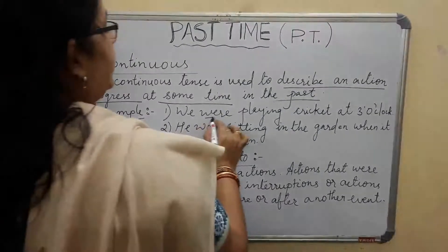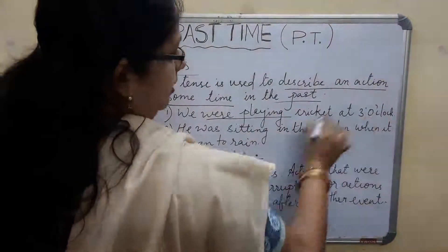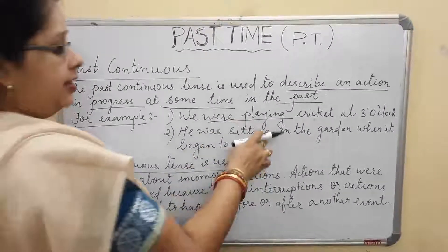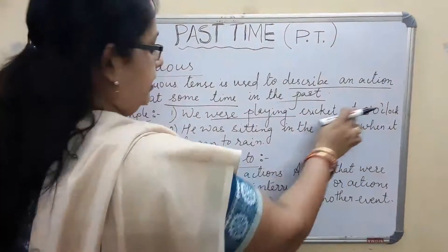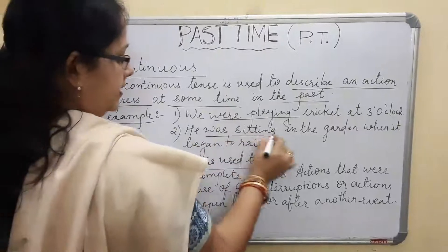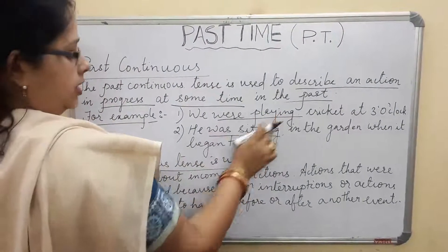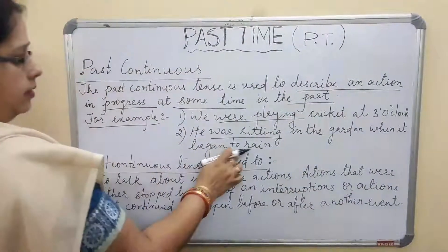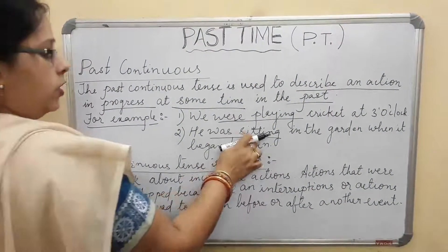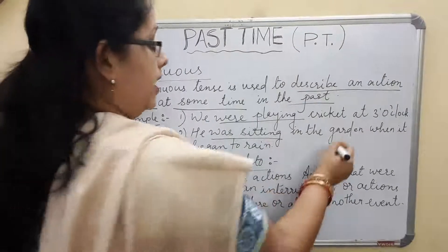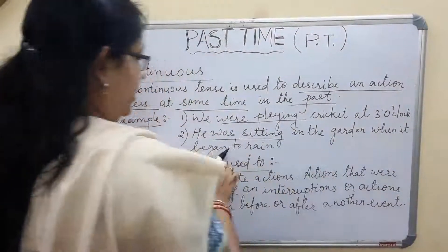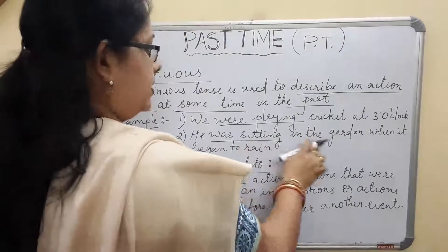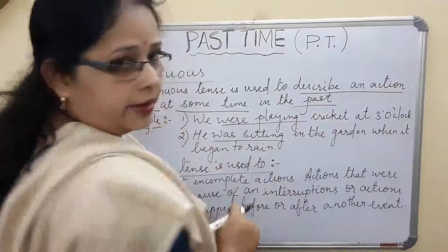For example: 'We were playing cricket at three o'clock' — so we were playing at three o'clock. Another example: 'He was sitting in the garden when it began to rain.' He was sitting in the garden, and when the rain started, he was still there in the garden.